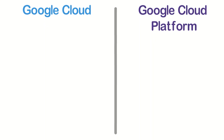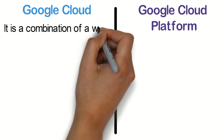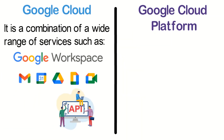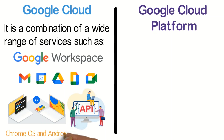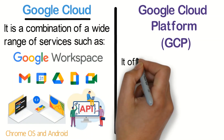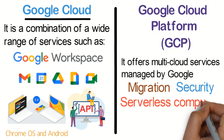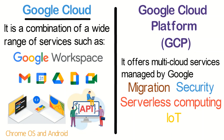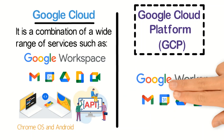Difference between Cloud and Google Cloud Platform. Many people think Google Cloud and Google Cloud Platform are the same. However, there's a minor difference between these two. The former is a combination of a wide range of services such as Google Workspace APIs for machine learning and enterprise versions of Chrome OS and Android. On the other hand, GCP is a part of Google Cloud and offers multi-cloud services managed by Google such as migration, security, serverless computing and IoT. Moreover, GCP Cloud infrastructure is considered the backbone of various applications like Google Workspace.